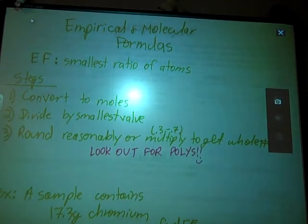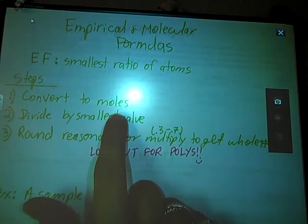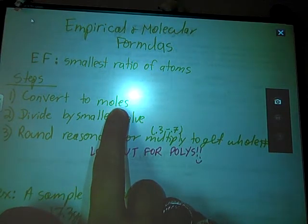After that, it's going to give you a number. You're going to divide by the smallest value of whatever your answers were. From this section, you're going to divide each of them by the smallest value.